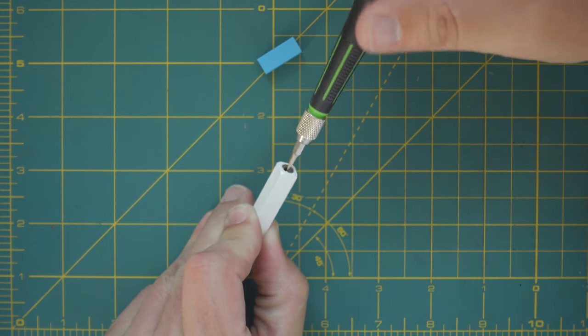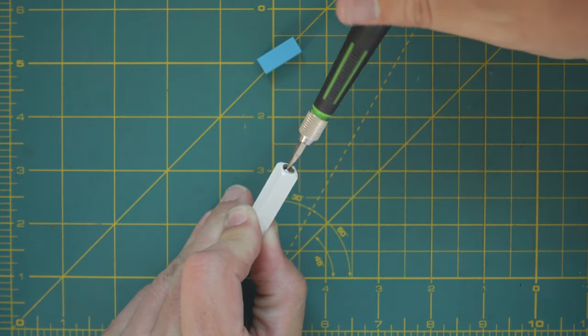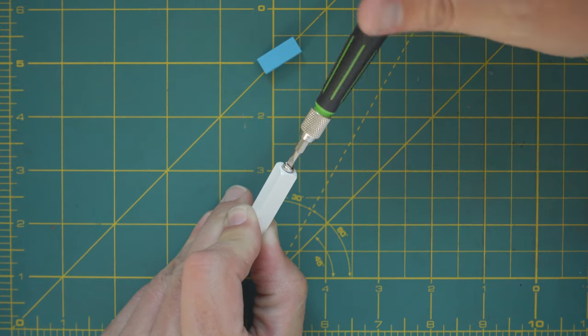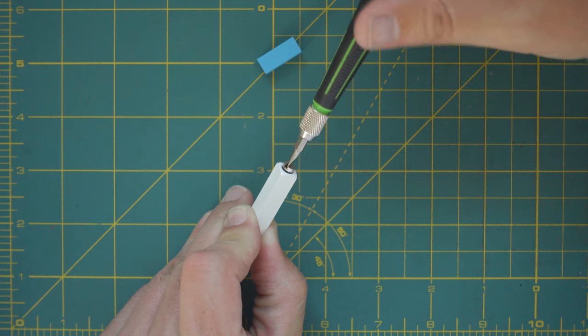To fill the lighter with lighter fluid there's a small screw at the bottom. You simply unscrew it and it gives you access to the opening where the lighter fluid goes.